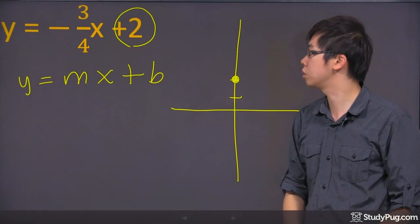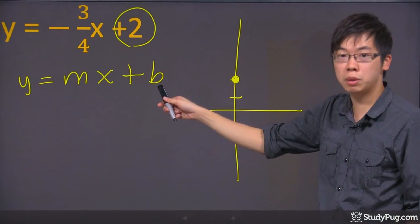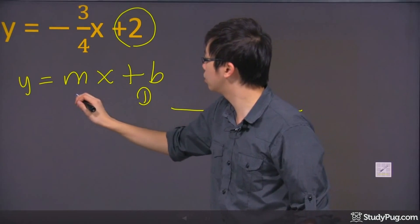you put a point down there for y equals 2, and that's your y-intercept, and that is your b. The next thing you do is you're going to do the slope.